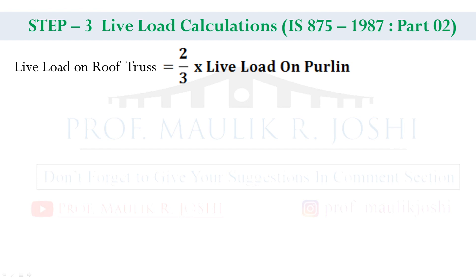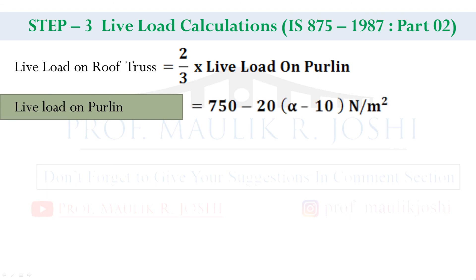Now let us talk about how to find live load on the purlin. For that, as per IS 875 Part 2, the live load on the purlin is given by the equation: 750 minus 20 into (alpha minus 10) newton per meter square.